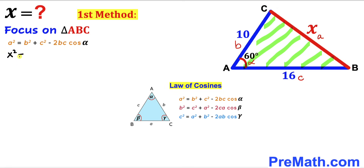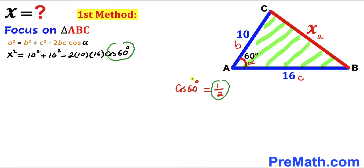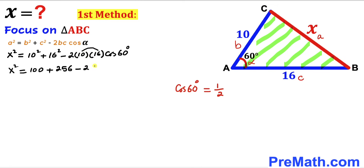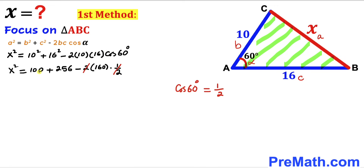So we get: x² = 10² + 16² − 2 × 10 × 16 × cos(60°). We know that cos(60°) = 1/2, so we replace that value. Simplifying: x² = 100 + 256 − 2 × 10 × 16 × (1/2). The 2 and 1/2 cancel, giving us 100 + 256 = 356, and 2 × 10 × 16 × (1/2) = 160.